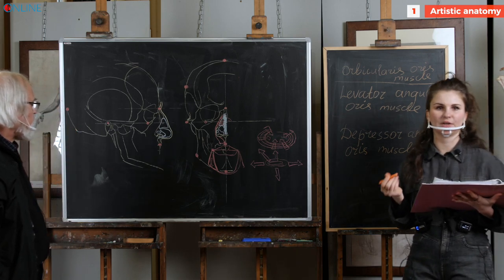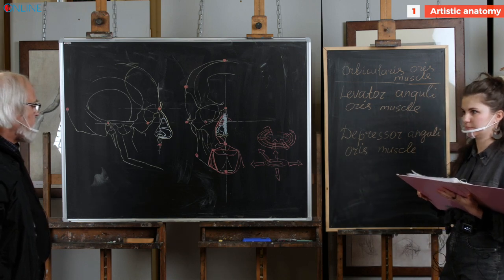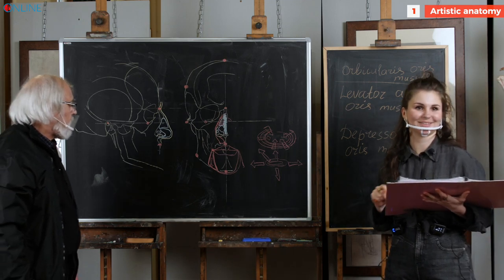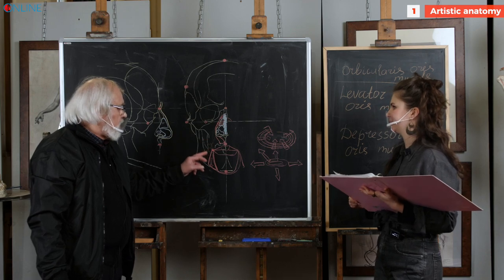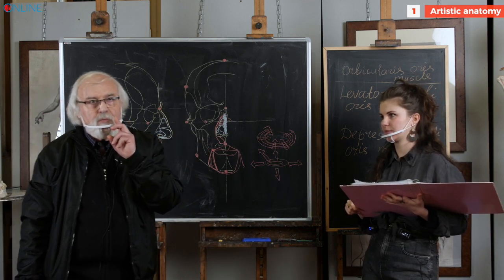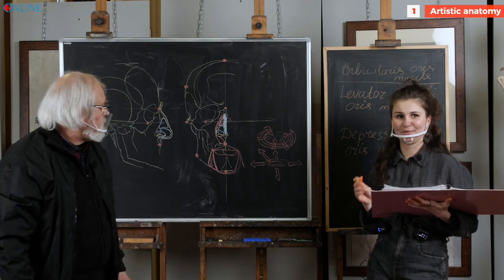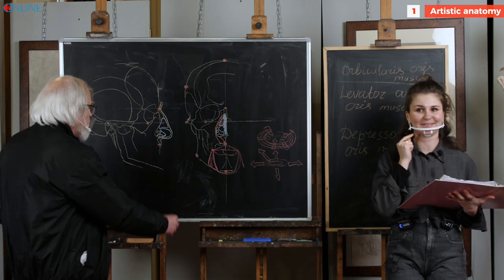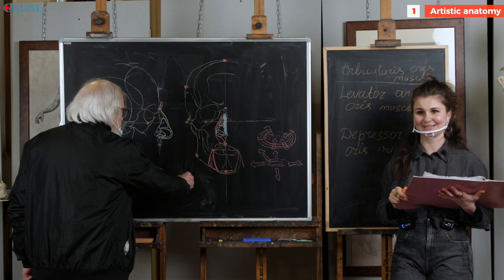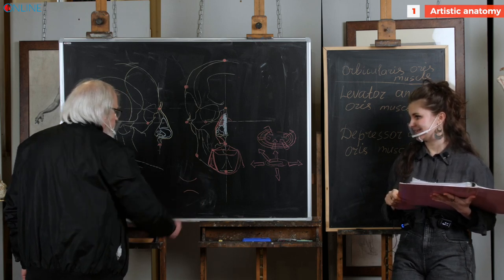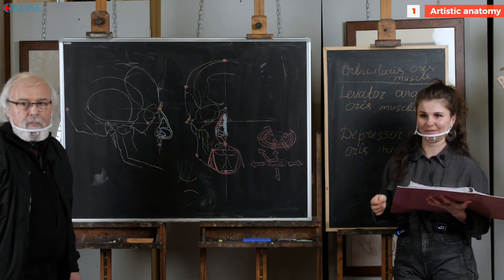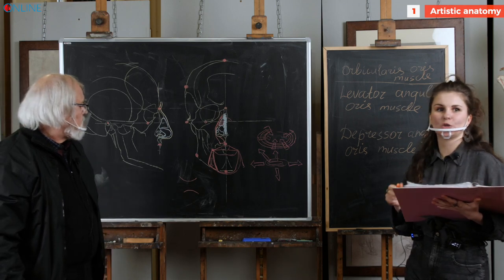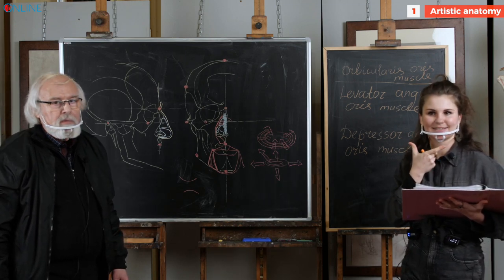For us, the most significance will have those muscles that are lying on the surface. Please note that we've just examined four muscles, and all of them are connected only with the corners of the lips — they can lift them up and bring them down. But they cannot work as the full extensors of the mouth.